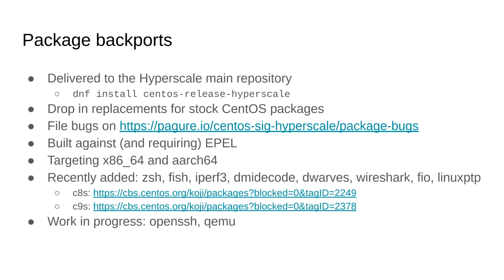Most of the time, if there are packages we need that are eligible for inclusion in EPEL, we'll prioritize getting them into EPEL rather than branching them for the SIG, because then they can be useful for everyone, including people using the RHEL rebuilds proper. We build packages for x86_64 and aarch64, because those are the platforms we can test and deploy on. If someone's interested in adding support for PowerPC or s390, be our guest — we would love that, but we have no ability to test on those platforms.